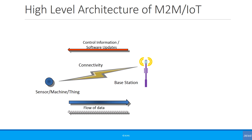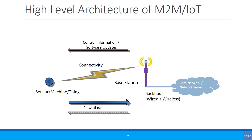But this is not always possible. The base station is connected via a backhaul to the core network or a network server, and this core network or network server is connected to the outside world — to the internet. This is not an accurate representation, but just a brief schematic to explain how the connectivity actually works.